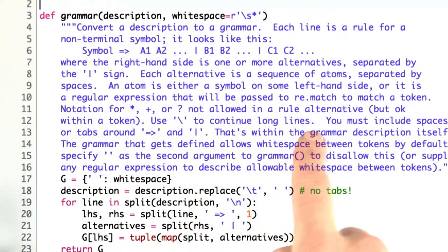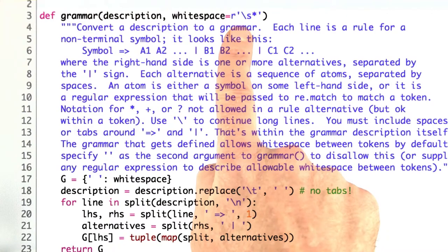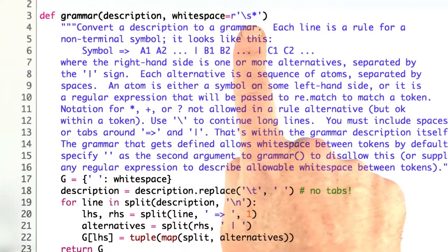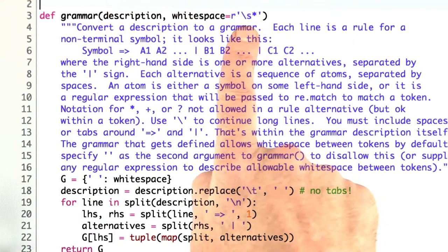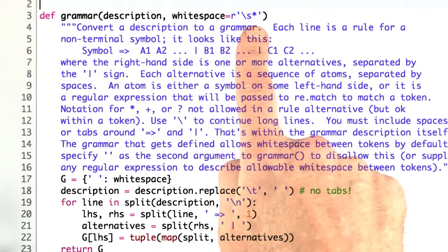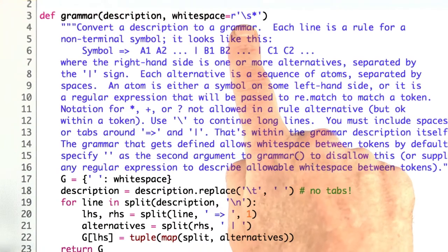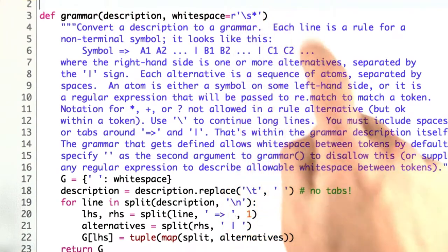Here it is, and there's two things you should notice about it right away. First is that I've added an optional parameter to say you can specify what whitespace is allowed in between tokens. Here it's saying s star is allowed any number of spaces, 0 or more.